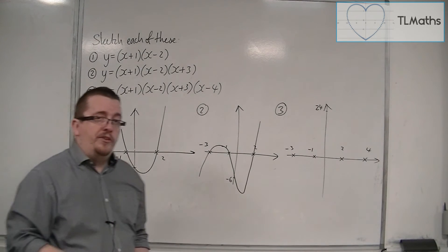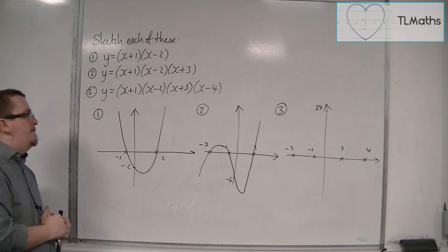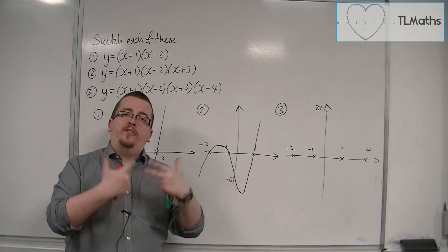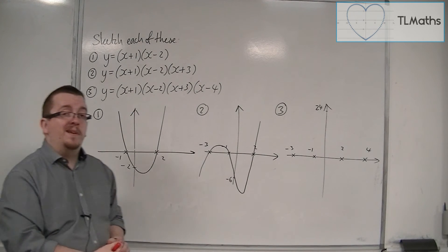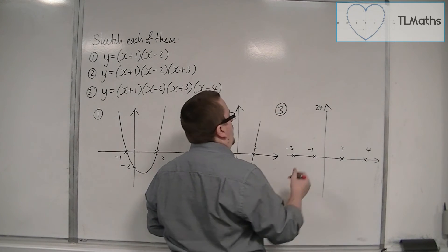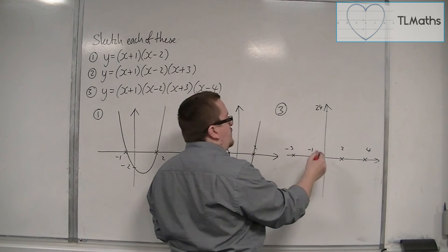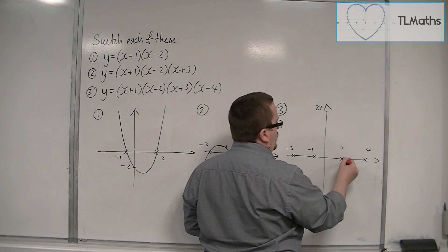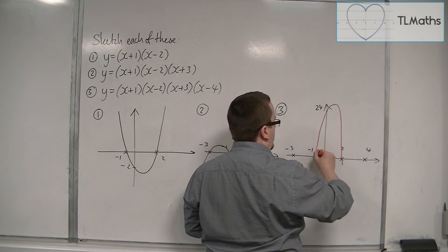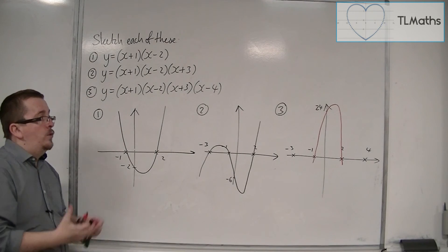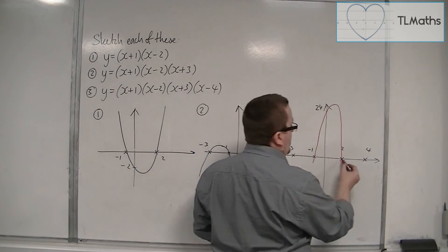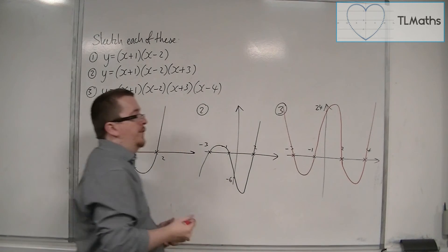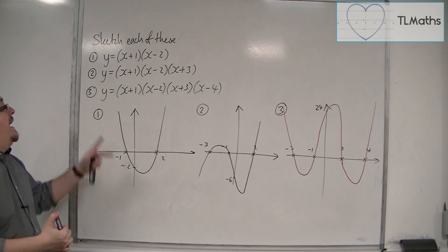Because we haven't seen a quartic before — for a cubic we start in the bottom left — for a quartic, because x to the 4 makes any number substituted into it positive, it must start in the top left. So starting in the top left, you can work backwards: the curve must do this, with a turning point somewhere here to go back through 4, and a turning point down here to go back through -3. And so this would be a sketch of number 3.